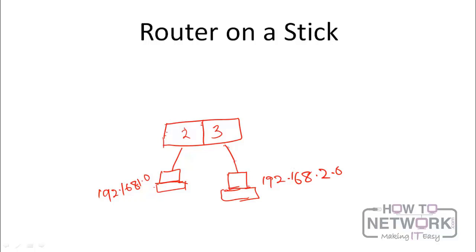If 192.168.1.2 tries to ping 192.168.2.2, it's not going to work because they are on different networks, even though they are connected to the same switch. To have communication between these two devices we need to figure out a way to route between them.